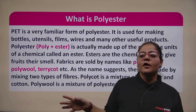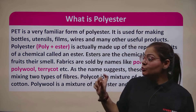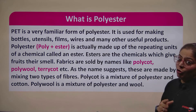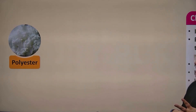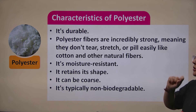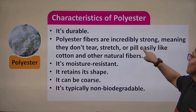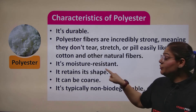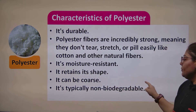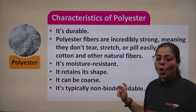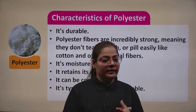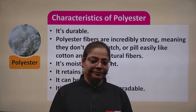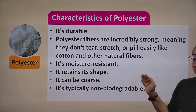We often relate it to plastic because we don't know the term polyester, but after this you should be very confident about the difference between plastic and polyester. Characteristics of polyester: it is durable — these fibers are incredibly strong, meaning they don't tear, stretch, or pill easily like cotton and other natural fibers. It is moisture resistant, retains its shape, can be coarse, and is typically non-biodegradable. That non-biodegradable nature is the one point that disturbs us today — because we always want biodegradable products. That is why polyester use is being somewhat discouraged — because it is not environment friendly.